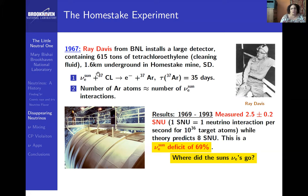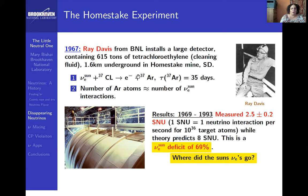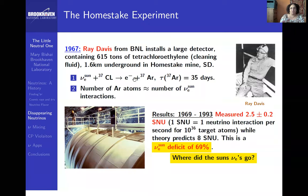The detection uses the process called inverse beta decay, where a neutrino is captured by a neutron to emit an electron. So 37-chlorine is converted to 37-argon — you've converted a neutron into a proton, so the atomic mass stays the same but Z changes. The chlorine converts into argon-37, which is an unstable isotope of argon — the stable isotope is argon-40 — and it decays in 35 days.